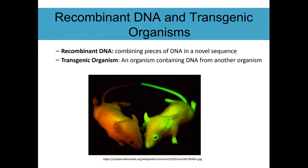PCR is a tool we can use to make copies of DNA just to look at and visualize. But recombining DNA and creating a transgenic organism is something different. Recombinant DNA is combining pieces of DNA that didn't start off together to make something new — you could take pieces from the same organism and switch their order, or take pieces from different organisms and put them together.